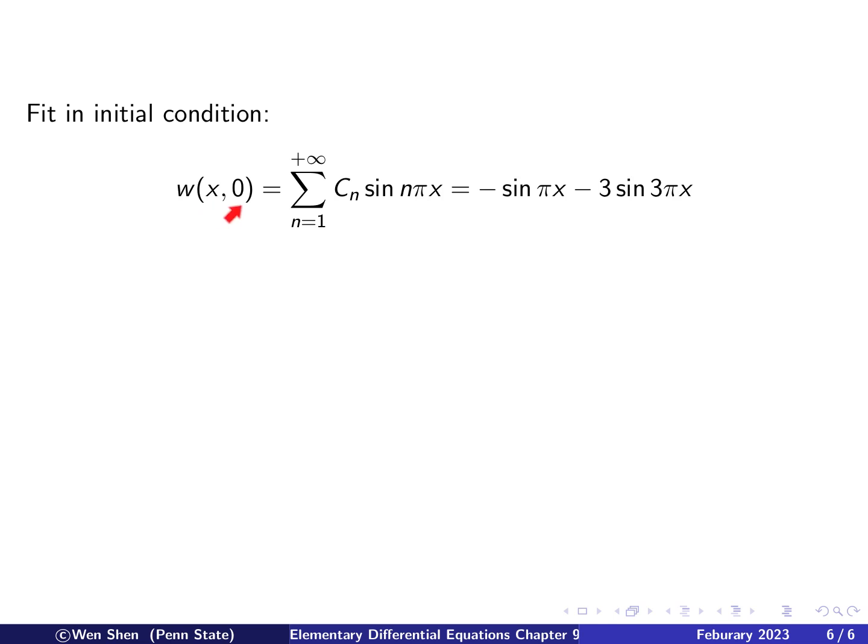Now let's fit in the initial condition. W(x,0), set t to be 0, can be written as a Fourier sine series here, and it has to match the initial condition which contains only two terms: sine pi x and sine 3 pi x. Then we see that this is a term that matches when n equals 1, and this is the term for n equals 3. So we see that this initial condition here is already a Fourier sine series. So what we need to do is just to match the coefficients c_n. So we see that c_1 here will be negative 1, which we write here, and then c_3 here will be negative 3, which we write here, and all the other c's will be 0.